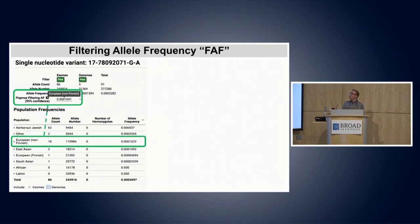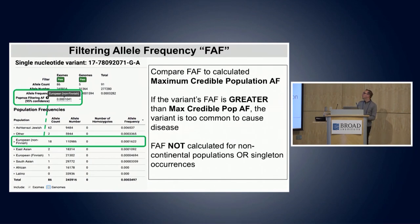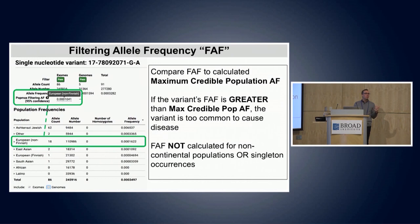One important note about the filtering allele frequency: it is only calculated for continental populations, so it won't be calculated for Ashkenazi Jewish or Finnish populations. Additionally, gnomAD will not calculate a filtering allele frequency based on a singleton occurrence — this prevents accidentally calling a variant benign just because one person had it in a region with only ~100 people sequenced, ensuring you're looking at a larger population cohort before incorrectly calling something benign at high frequency in a very small population.